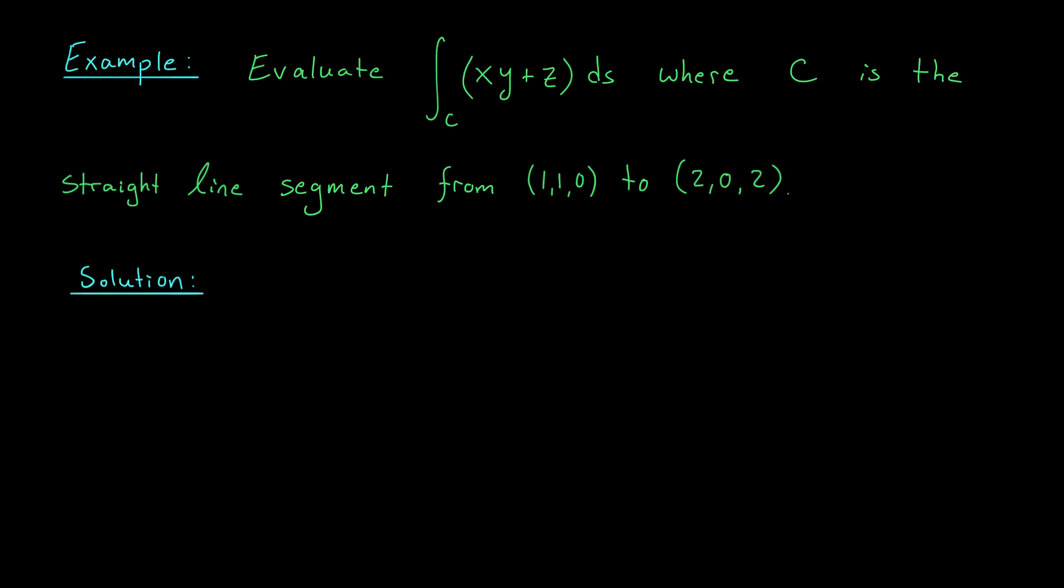Let's see if we can evaluate this line integral of a function of three variables. Here, we're integrating xy plus z with respect to arc length along this curve C. C is the straight line segment from (1,1,0) to (2,0,2). Since we're working with a straight line segment, we can use our trick from the last example. We can parametrize the curve C using the vector function r of t given by t times the terminal point, that's t times (2,0,2), plus 1 minus t times the initial point, (1,1,0). When you simplify, you'll be left with (1 plus t, 1 minus t, 2t), with t going between 0 and 1.